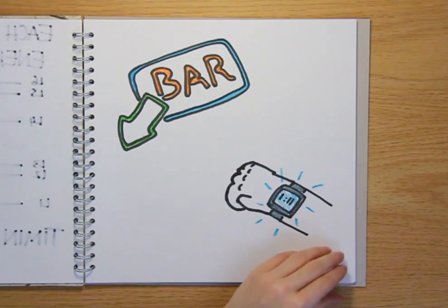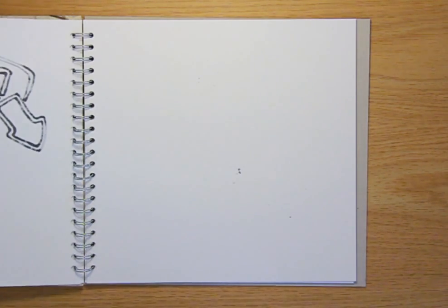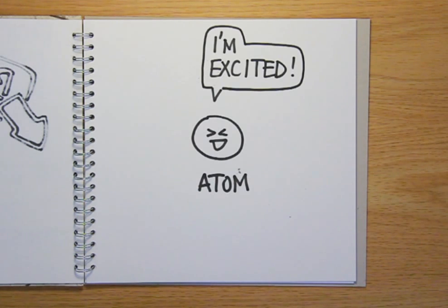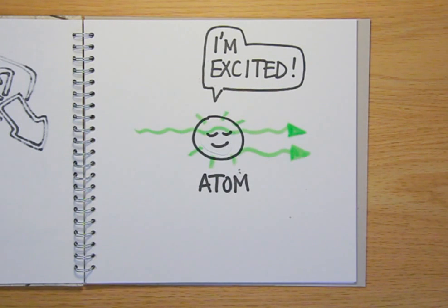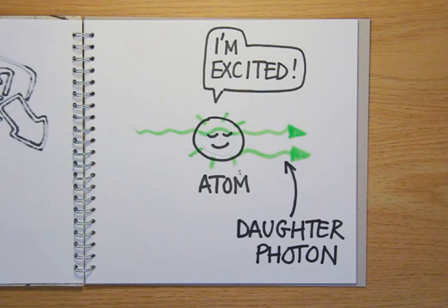But there is another way that atoms can emit light. When an atom that's already been excited by electricity, a chemical reaction or light, is hit by a photon of a particular energy, this can make the atom simultaneously emit a daughter photon with exactly the same energy and direction.